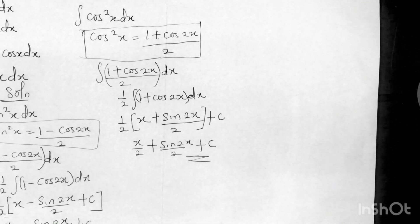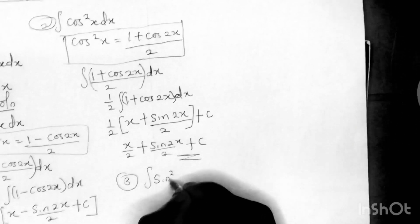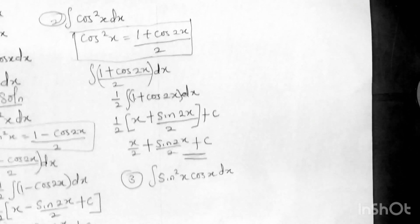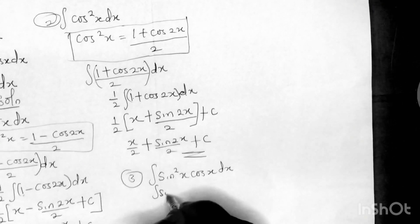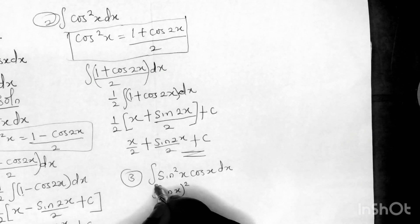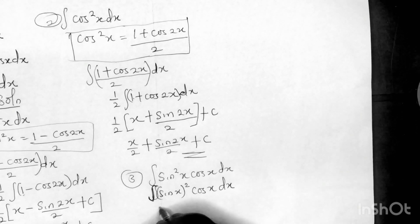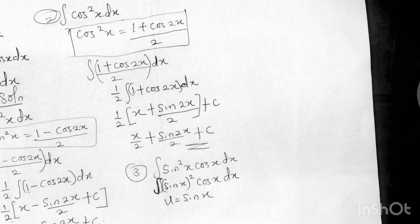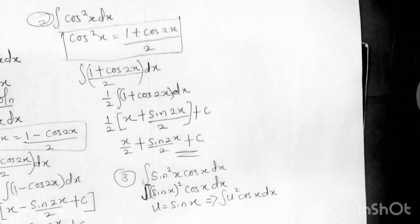Now for the third example: the integral of sine squared x times cos x dx. The first thing you need to do is use the substitution method. We can write sine squared x as (sin x) squared, so the integral is (sin x)² times cos x dx. Let u equal sin x, so the integral becomes the integral of u² times cos x dx.